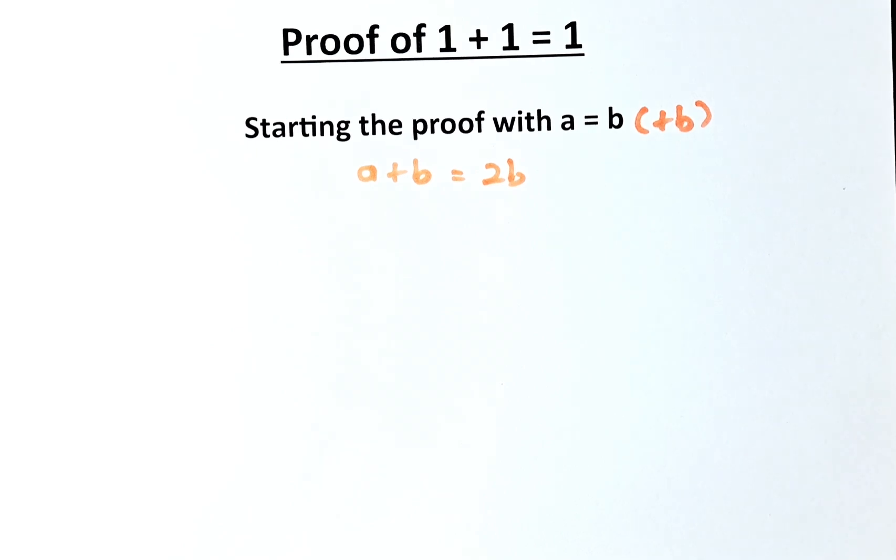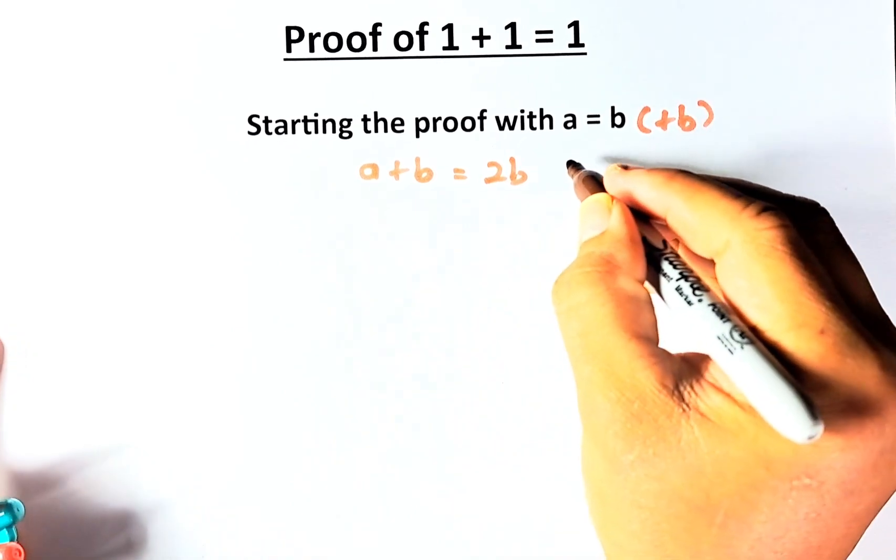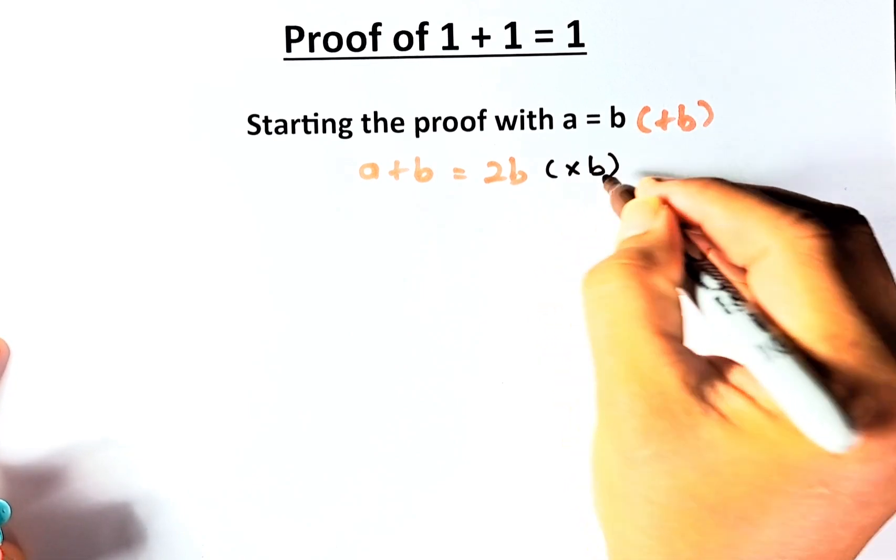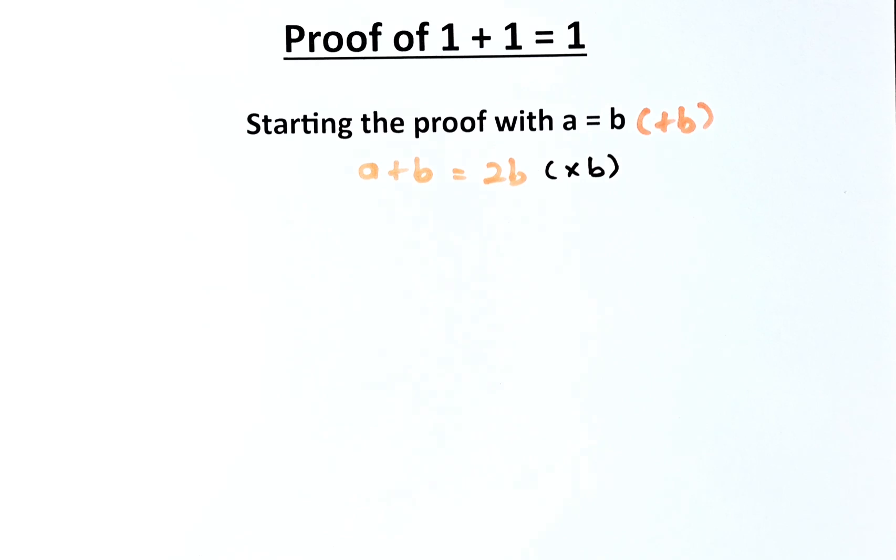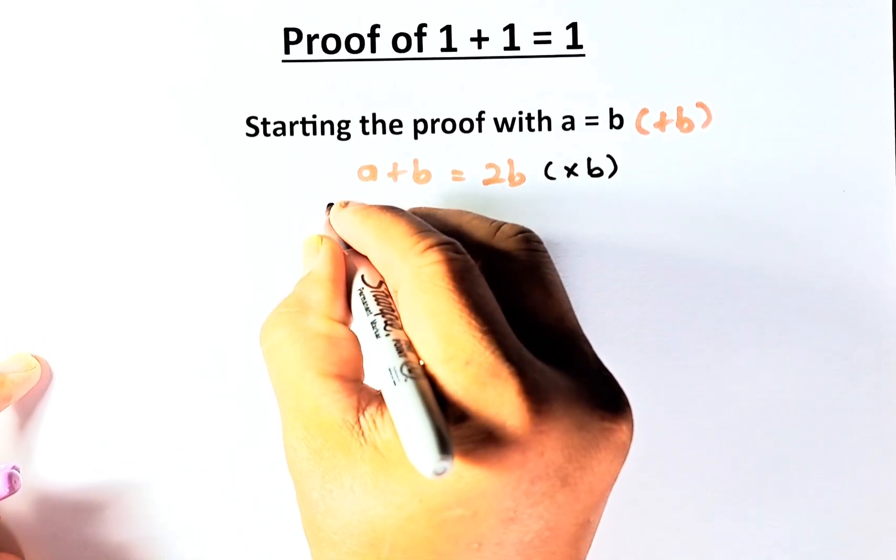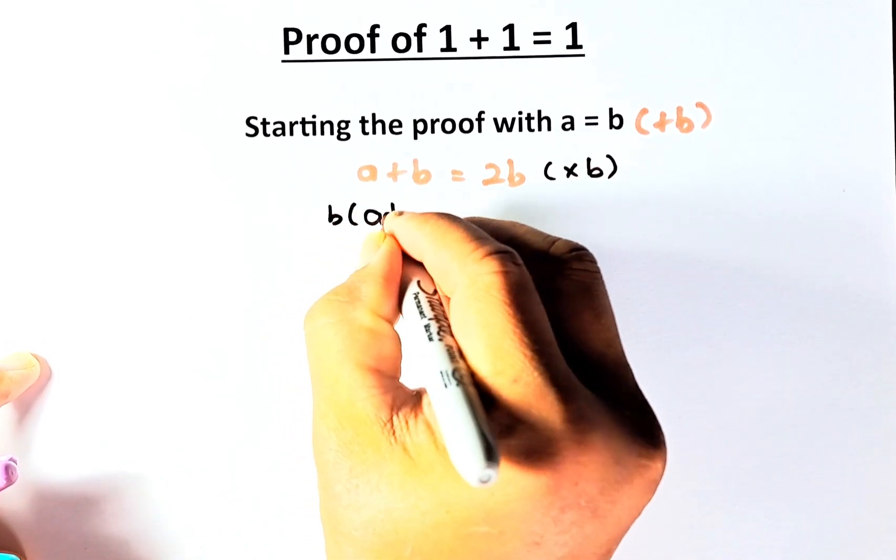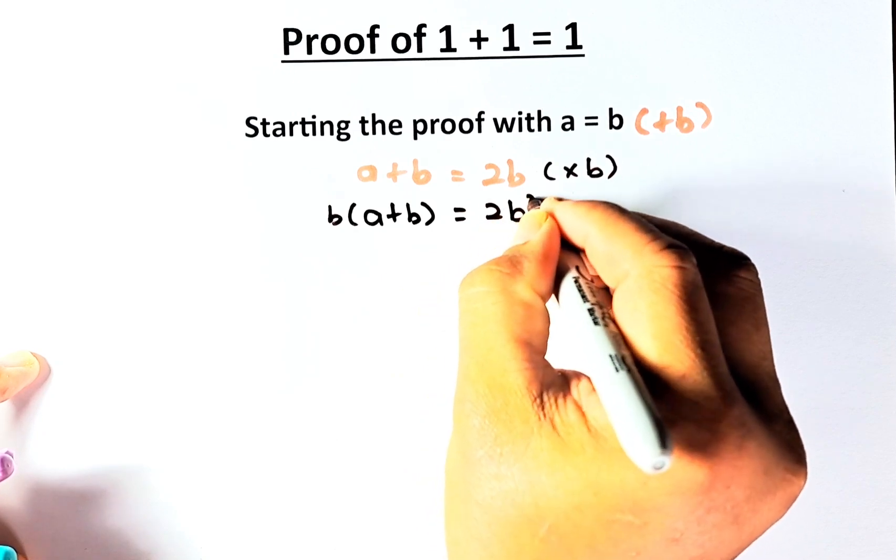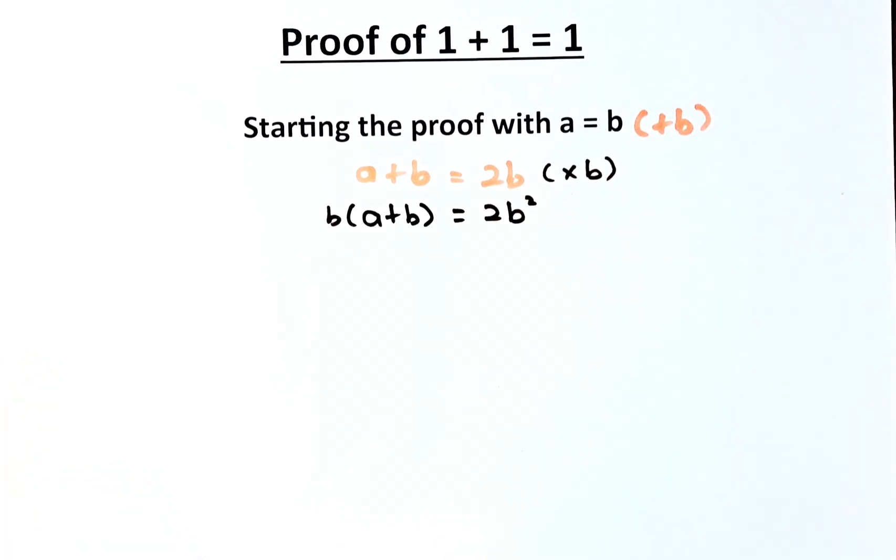Now, we're going to do something different. The next step, instead of adding b, we are going to multiply by b on both sides of the equation. So when we multiply by b, what we get is that b bracket a plus b equals to 2b squared, because 2b times b is 2b squared.